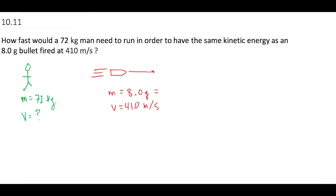And let's put that into standard units right off the bat. So 1, 2, 3, so we have 0.008 kilograms for the mass of the bullet.